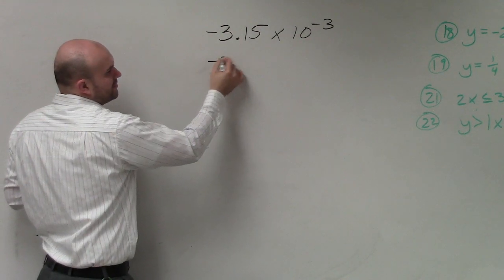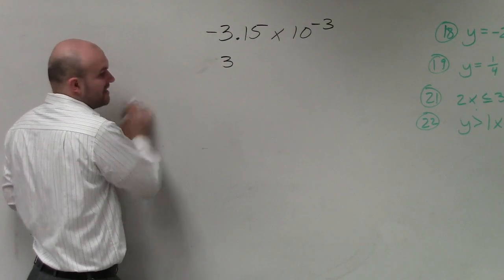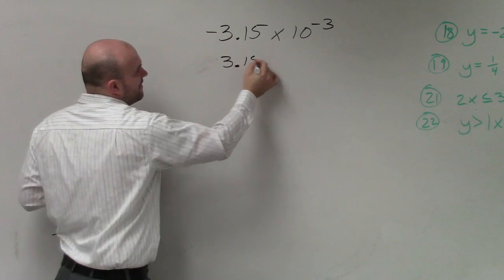So basically what you do is it doesn't really matter about the negative sign. You can just leave that in at the end. But take 3.15.